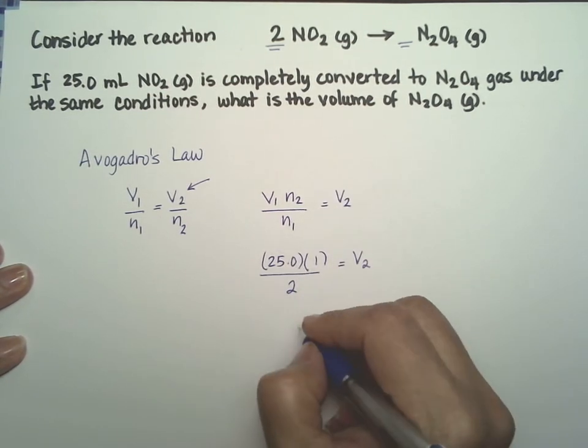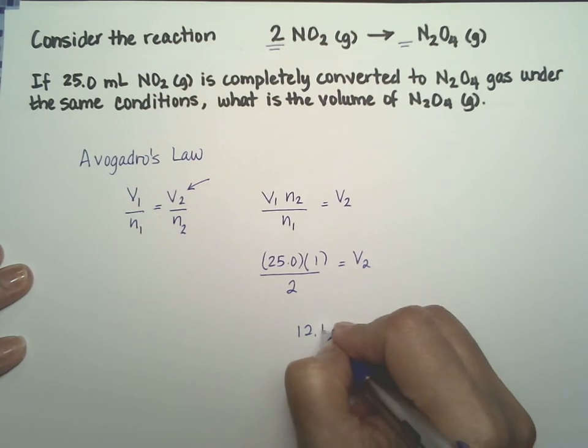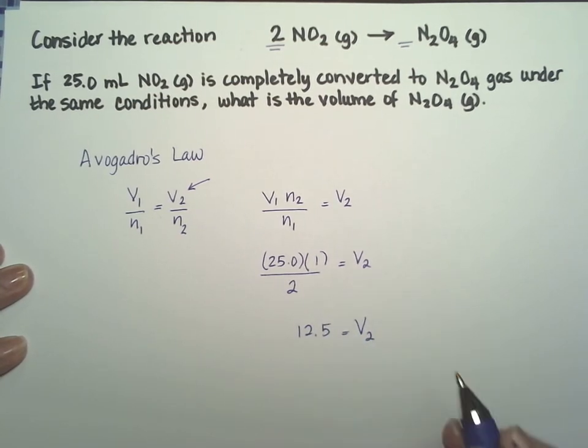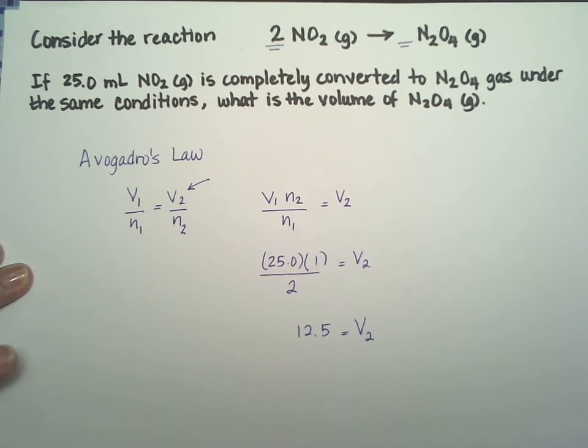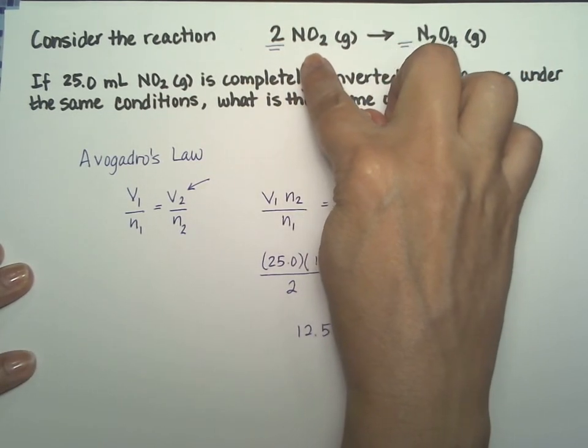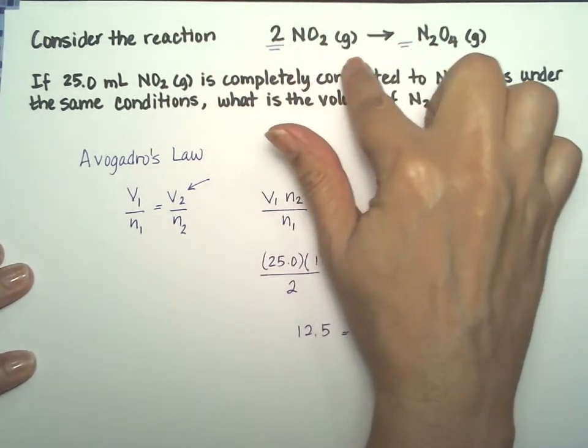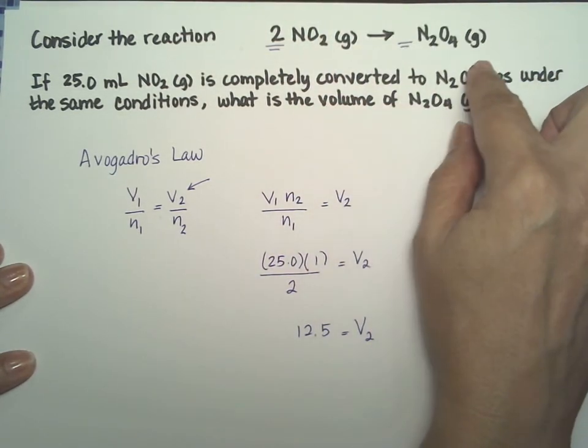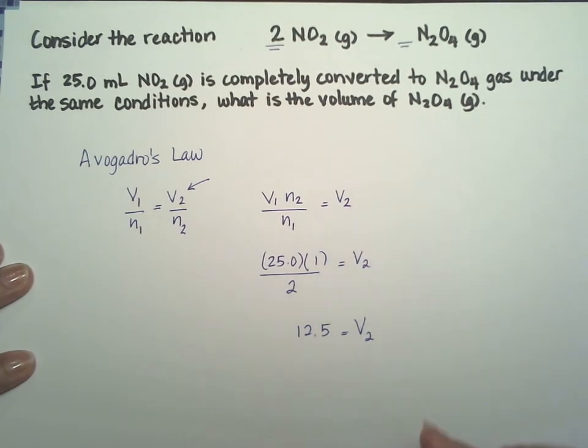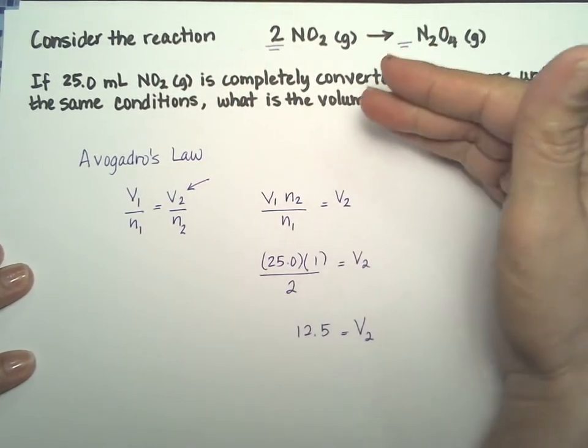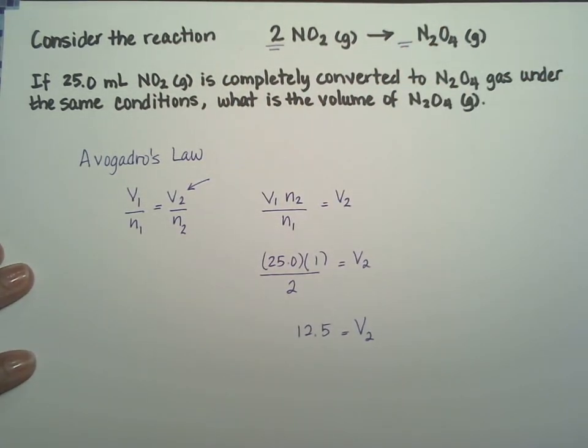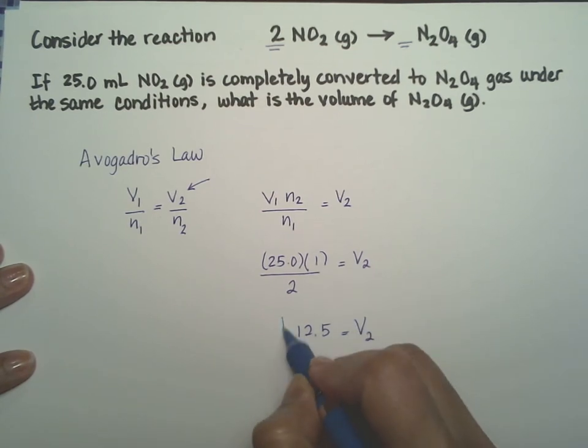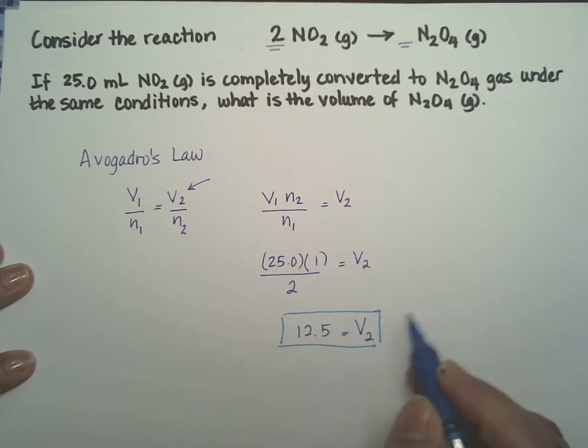And after you do this, you know that the second volume is half the original volume. Does it make sense? Well, let's see. You have two moles of NO2, and those two moles only make one mole of the product, so it makes sense that if you actually just go from two moles to one mole, the volume will be reduced by half as well.